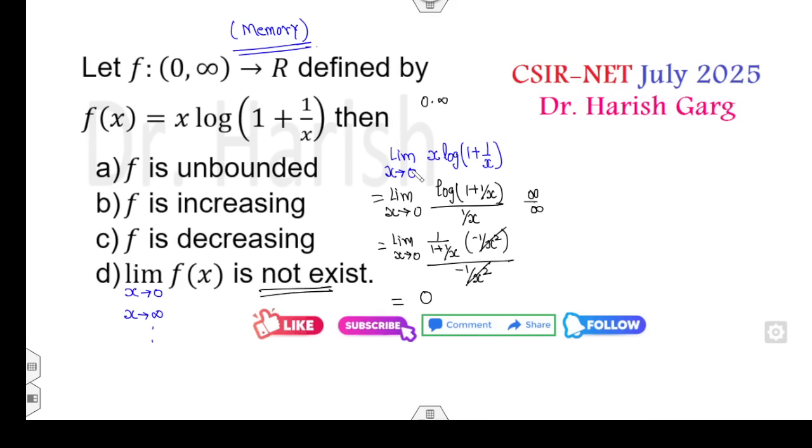On the other hand, if I take the limit is infinity, then this case will be infinity times 0. Again it's an undetermined form. In that case, this number will be 0 by 0 form, again the same calculations. Answer will be 1. Both the cases, limits are finite, so option d will be cancelled.